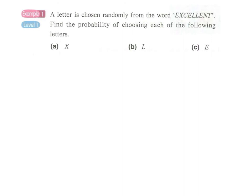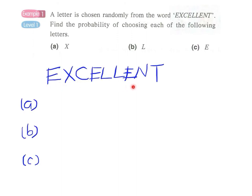Find the probability of choosing each of the following letters: X, L, E. We can do this by counting. We simply count the number of characters in the word 'EXCELLENT'.